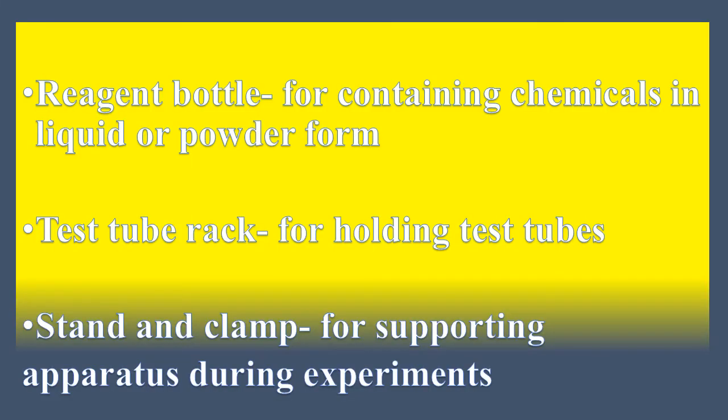The Reagent Bottle is for containing chemicals, both in liquid or powder form. The Test Tube Rack is for holding and keeping test tubes, and it is also used for carrying the test tubes around inside the lab, for example when you are working with more than one test tube. The Stand and Clamp is for supporting apparatus during experiments — for example, it supports the Bunsen burner when it is being used in an experiment.